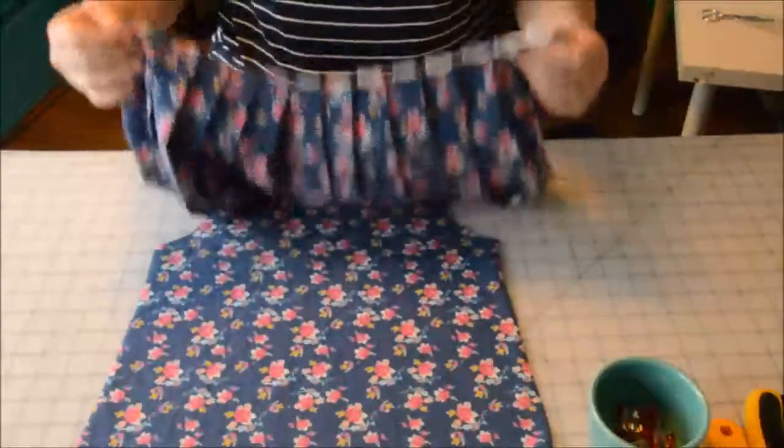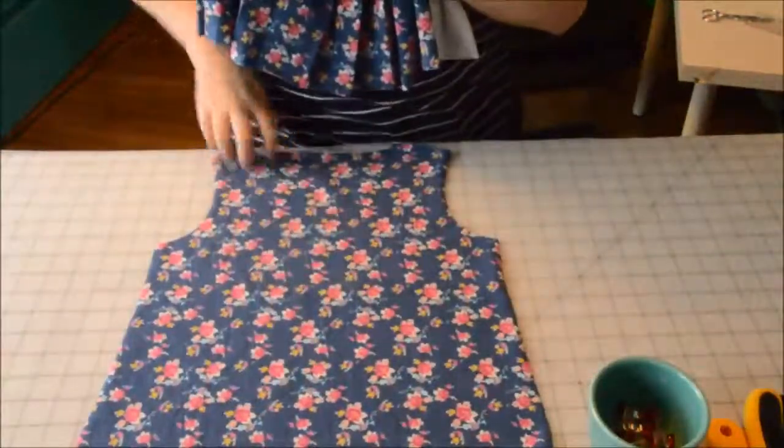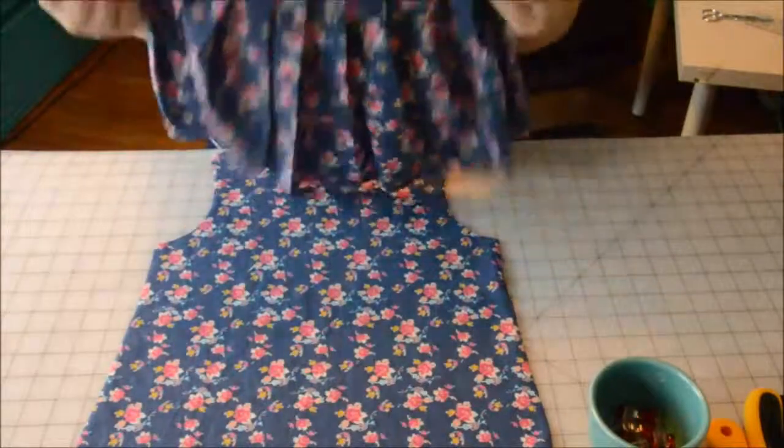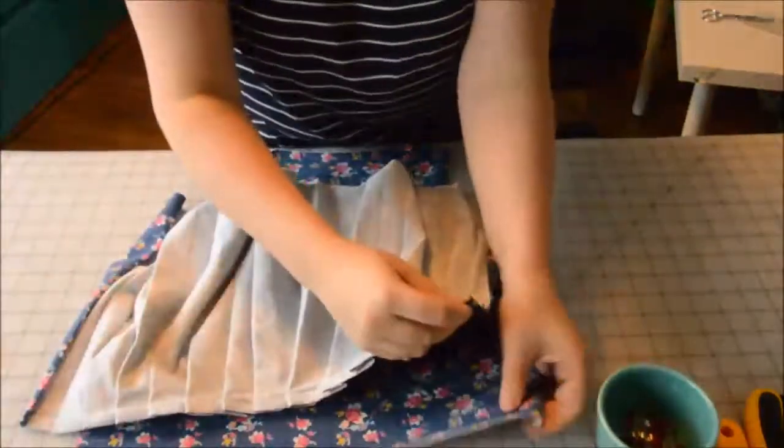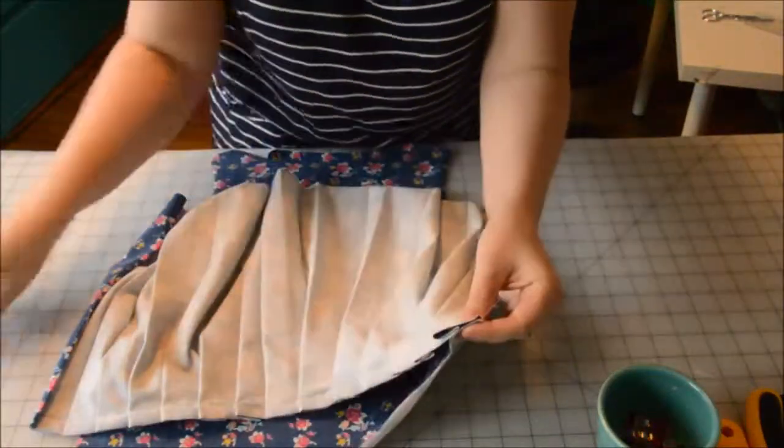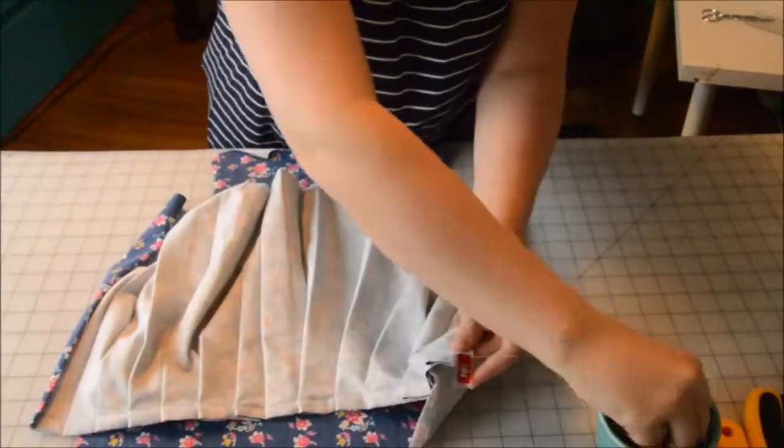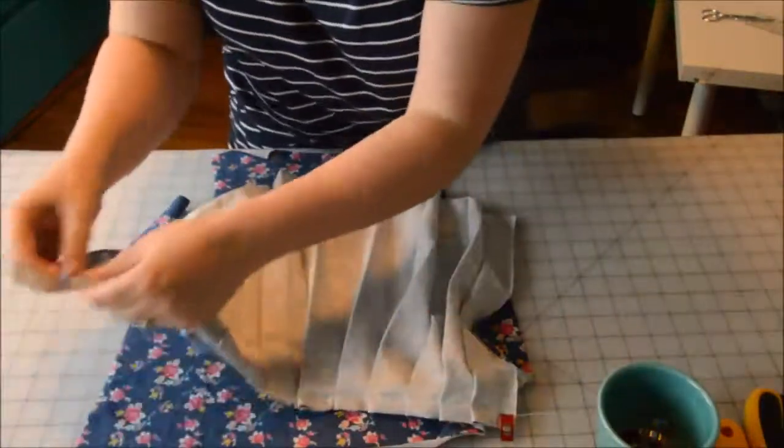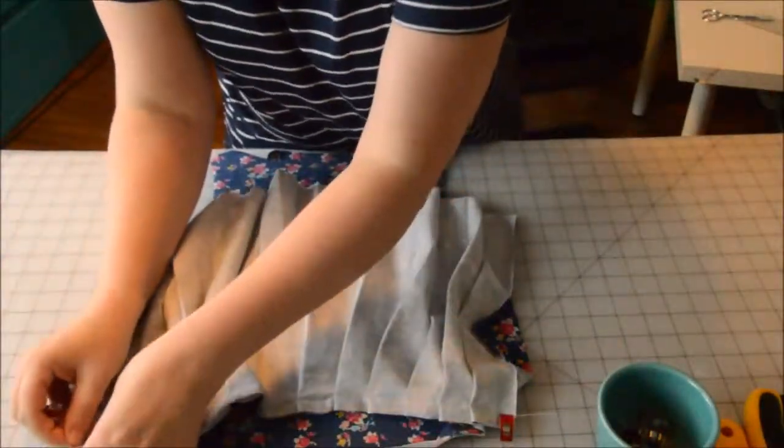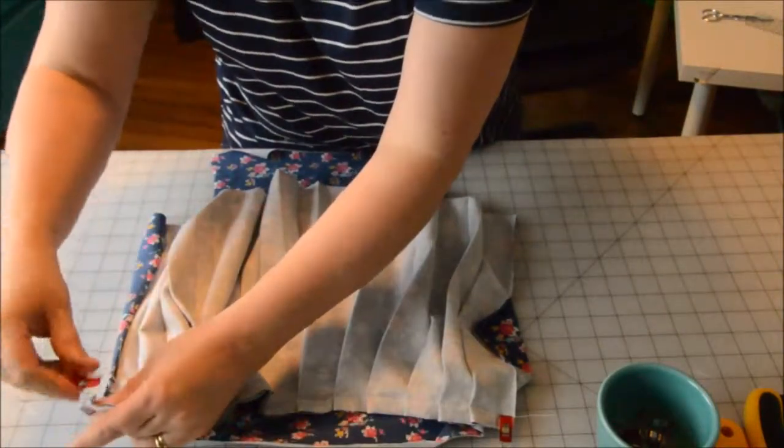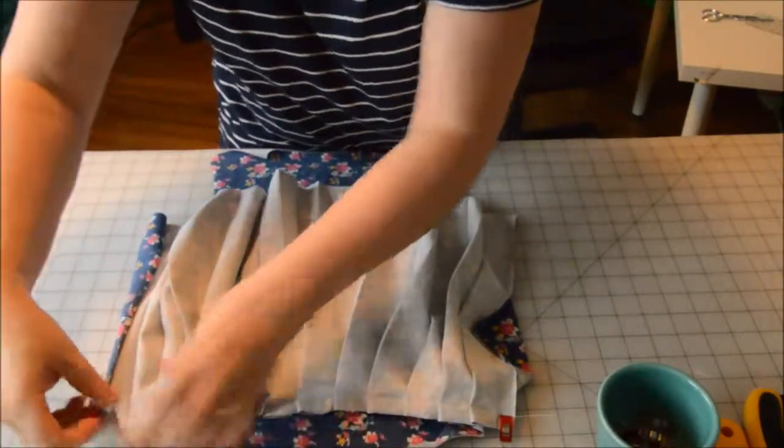Now you're going to place this, align this to your dress front or back, whichever side. Line up your sides. It may look like the skirt's going to be too long, too wide for the body. It will actually work out though. Just, you've got to use your pins or clips.